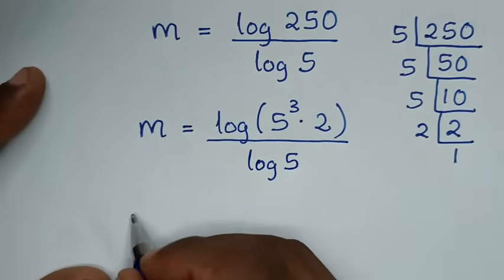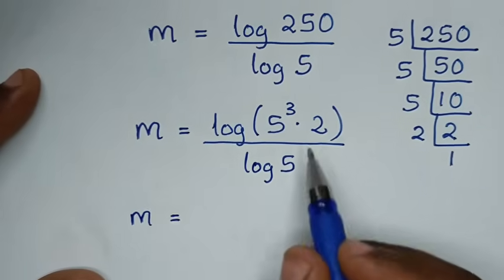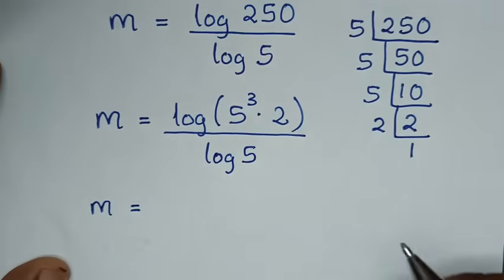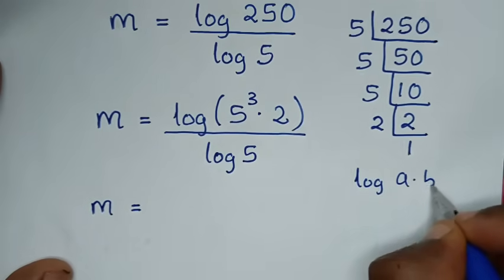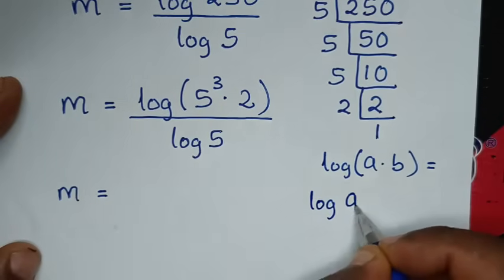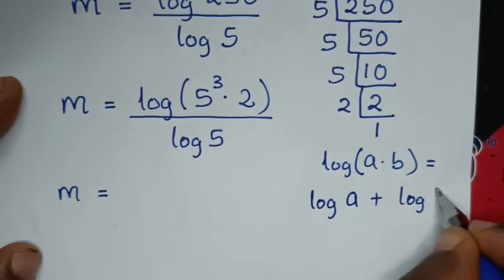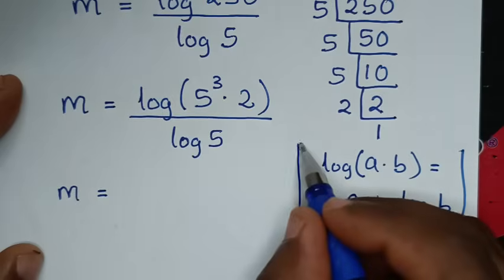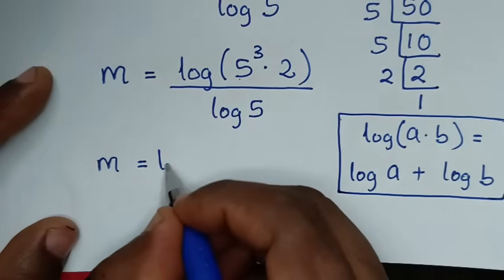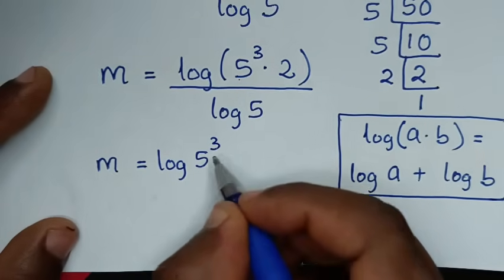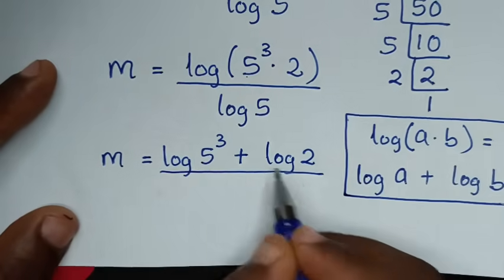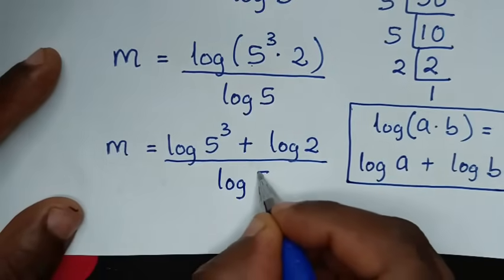Then in the next step, m is equal to log of 5 power of 3 times 2 over log of 5. This part is in the form of the rule log(a times b) equals log a plus log b. So it becomes log of 5 power of 3, plus log of 2, all over log of 5.